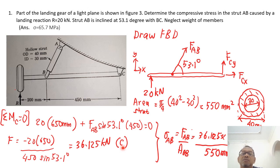So we move on to find the stress AB equals to force divided by area. So 36.25 times 10 to the 3, this is kN, divided by the area 550. And we get 65.7 MPa. This is in compression. So that's how you solve this problem. Thank you.